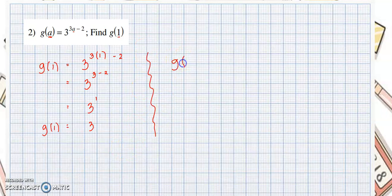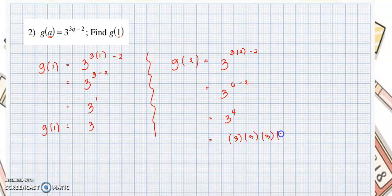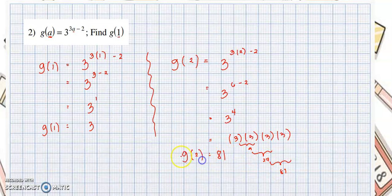How about g of 2? We substitute 2 for a: 3 raised to 3 times 2 minus 2, which equals 3 raised to 6 minus 2, that is 3 raised to 4. To evaluate: 3 times 3 times 3 times 3 — 3 times 3 is 9, then 9 times 9 is 81. So g of 2 equals 81.